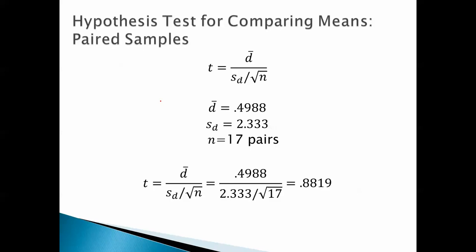So there's the sample mean, sample standard deviation, N equals 17. Plug all of that in, and we get T equals .8819.